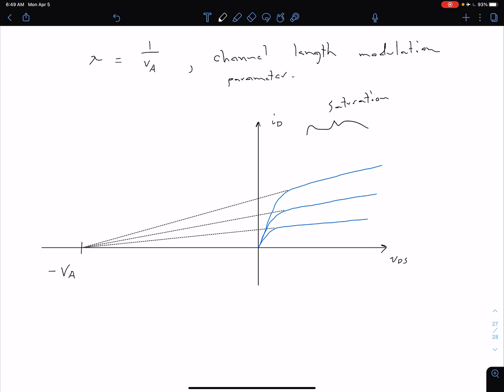This voltage we're going to call negative VA. As we stated above, 1 over VA is equal to lambda. So this is going to be equal to negative 1 over lambda.